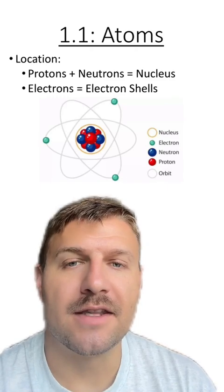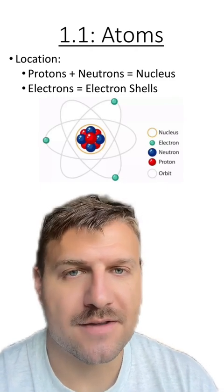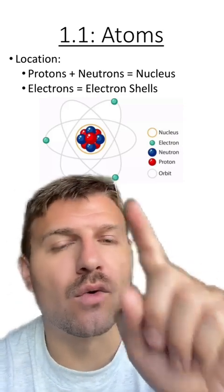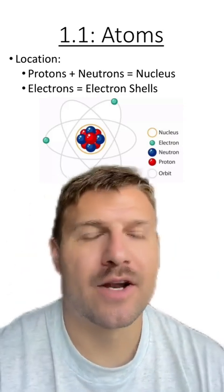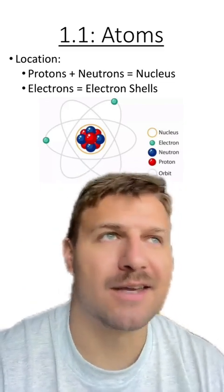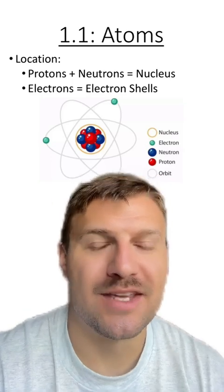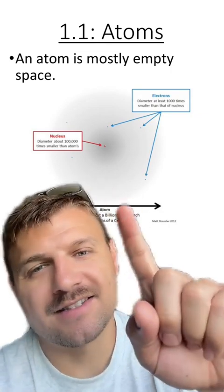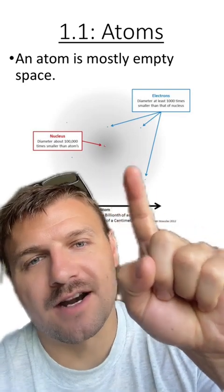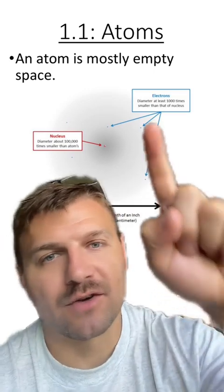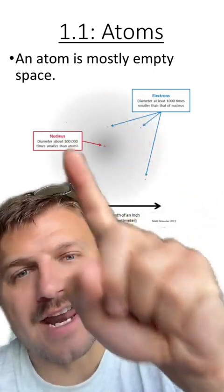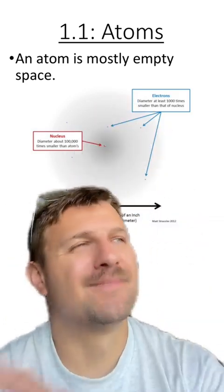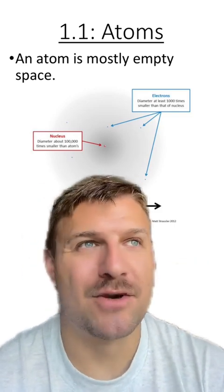The protons and neutrons are located in the center of the atom called the nucleus. This is different from the nucleus of a cell. The electrons are located in these things called orbitals or shells. Something to remember about an atom is that an atom is mostly made of empty space. I like this diagram that shows the nucleus being very small in the center, and the electrons are in the orbitals or in the electron field around. Most of that space is just empty space. There's nothing there.